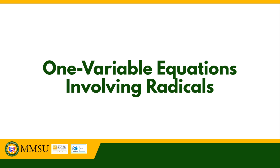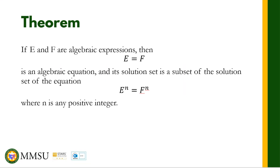To solve equations involving radicals, we shall use the theorem stated on the slide. If E and F are algebraic expressions, then E equals F is an algebraic equation, and its solution set is a subset of the solution set of E raised to N equals F raised to N, where N is any positive integer. This means the solution set of E raised to N equals F raised to N may not all be solutions of E equals F — that is why checking is critical.